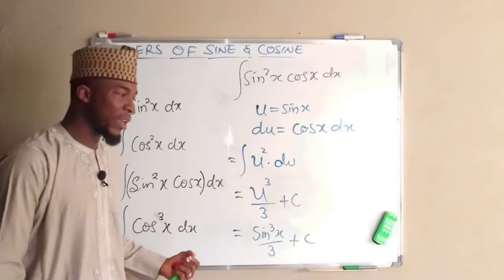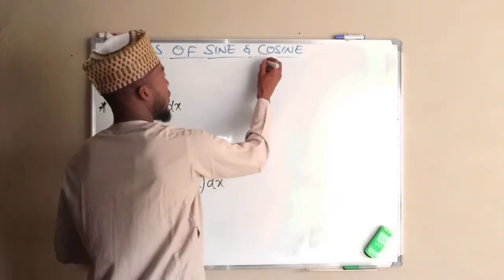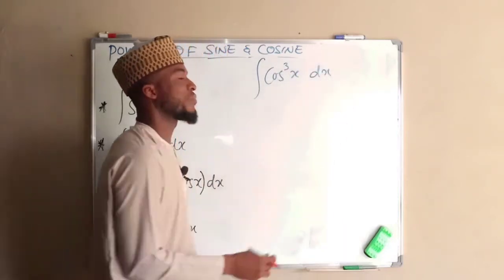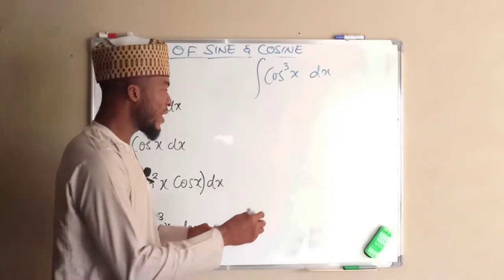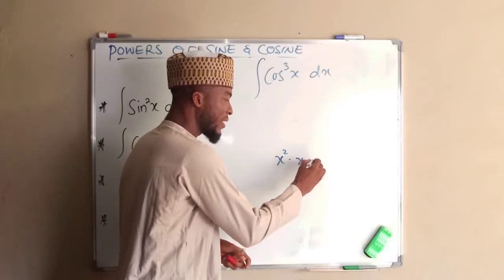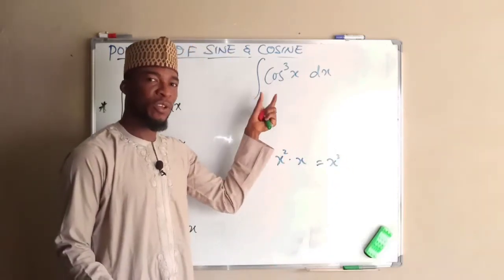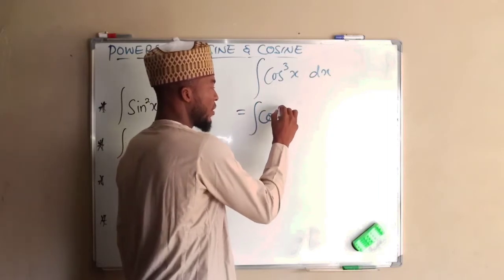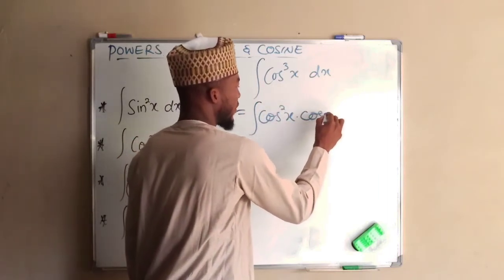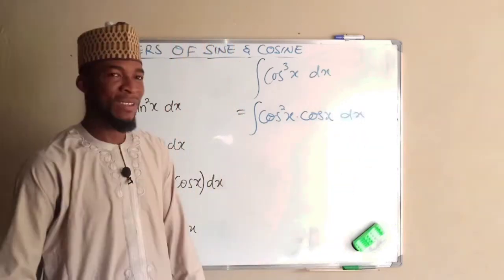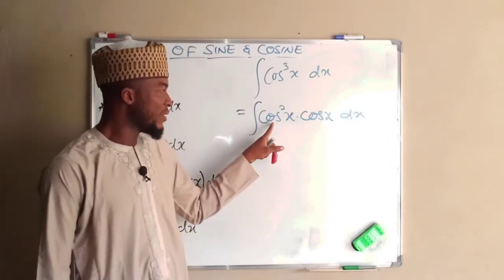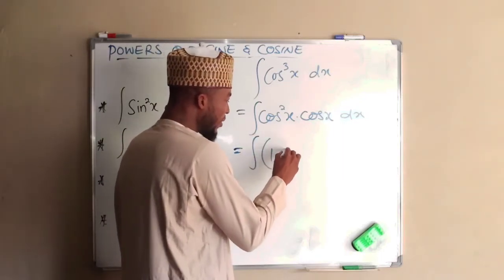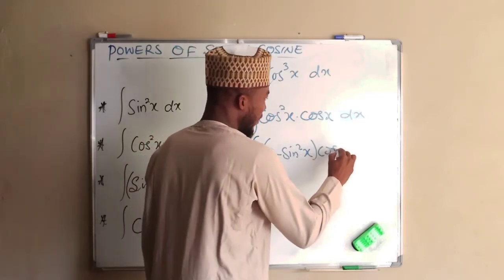Now for the last one: the integral of cos cubed X DX. We can split this function — just as X squared times X equals X cubed — into cos squared X times cos X. This equals the integral of cos squared X multiplied by cos X with respect to X. Using the trigonometric identity, cos squared X can be written as 1 minus sine squared X.